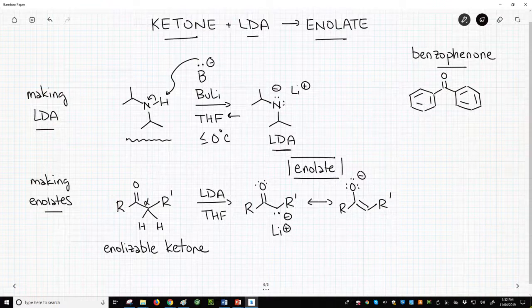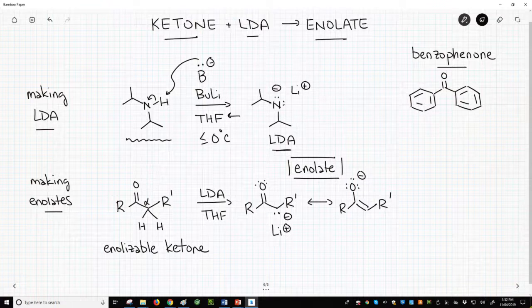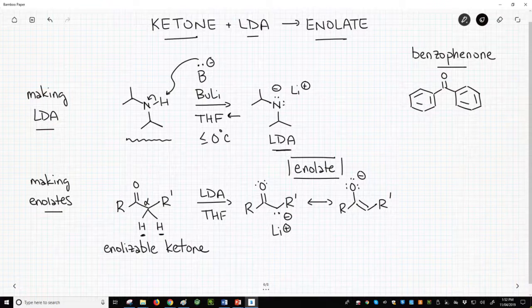This ketone needs to have a hydrogen off of the alpha carbon relative to the carbonyl. This ketone is called an enolizable ketone.